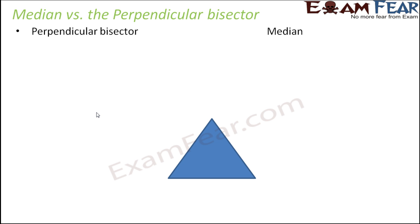When we say perpendicular bisector — perpendicular means a line which is perpendicular to a particular line, that means a line which makes an angle of 90 degrees on a particular line. Bisector means a line which bisects another line, that means it divides another line into two equal parts.